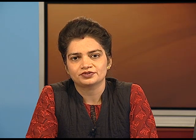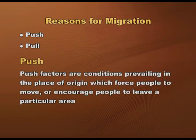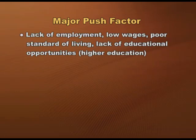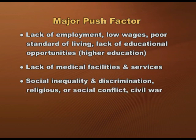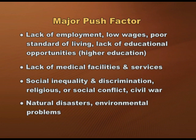What makes people migrate from one place to another? The reasons can be divided into push and pull factors. Push factors are conditions prevailing in the place of origin which force or encourage people to leave. Major push factors include lack of employment, low wages, poor standard of living, lack of educational opportunities particularly higher education, lack of medical facilities, social inequality and discrimination, religious or social conflict, civil war, natural disaster, and environmental problems.